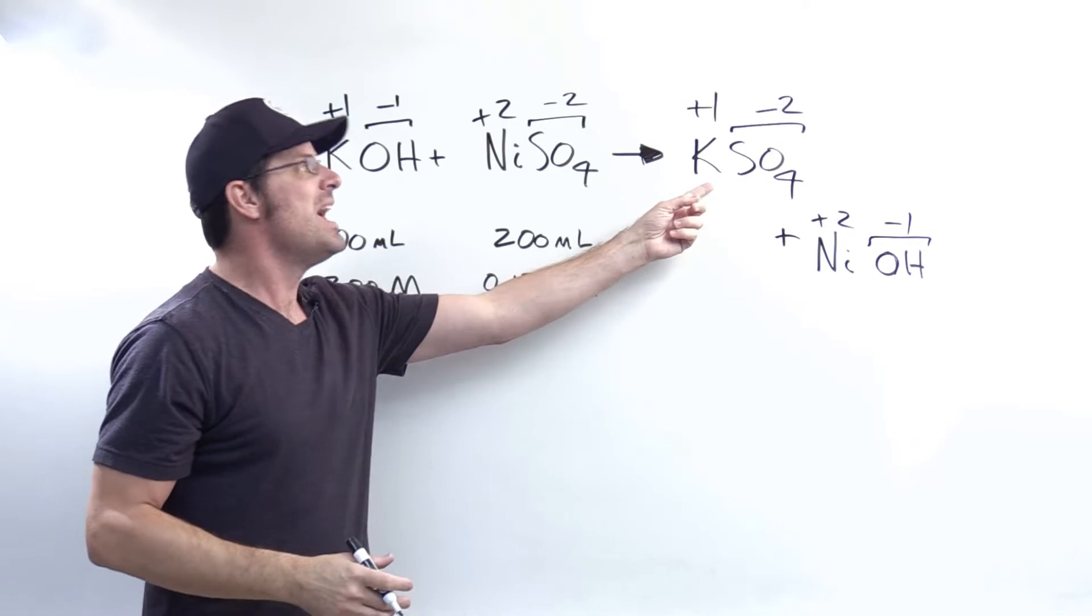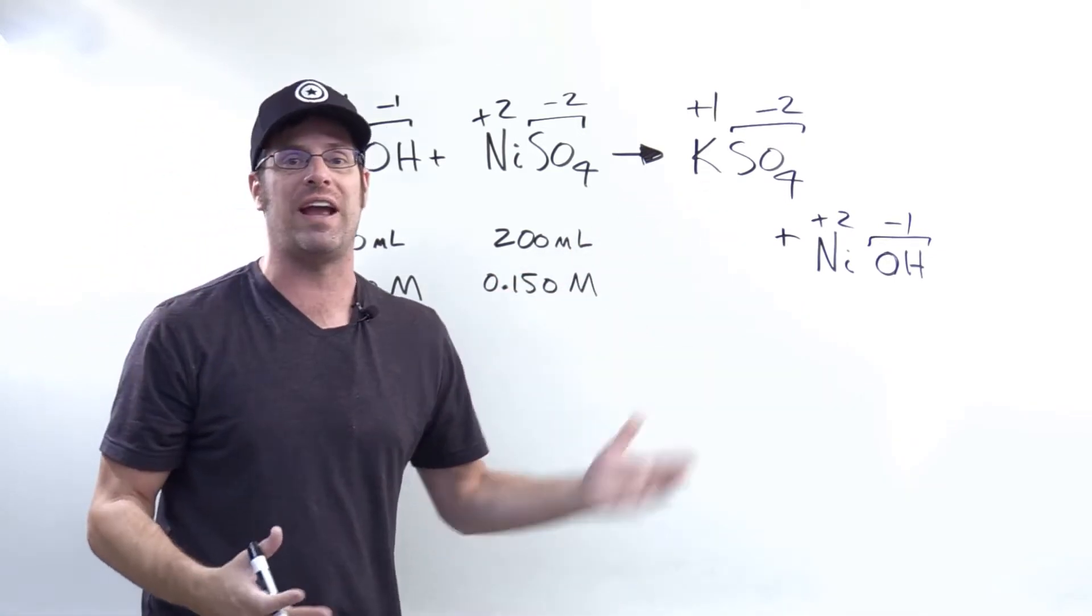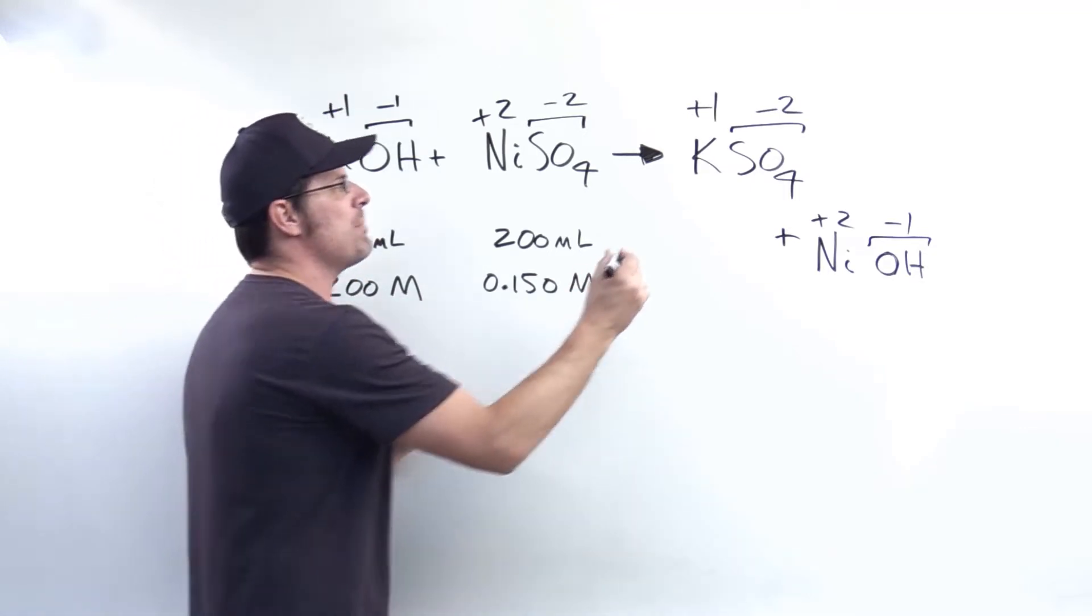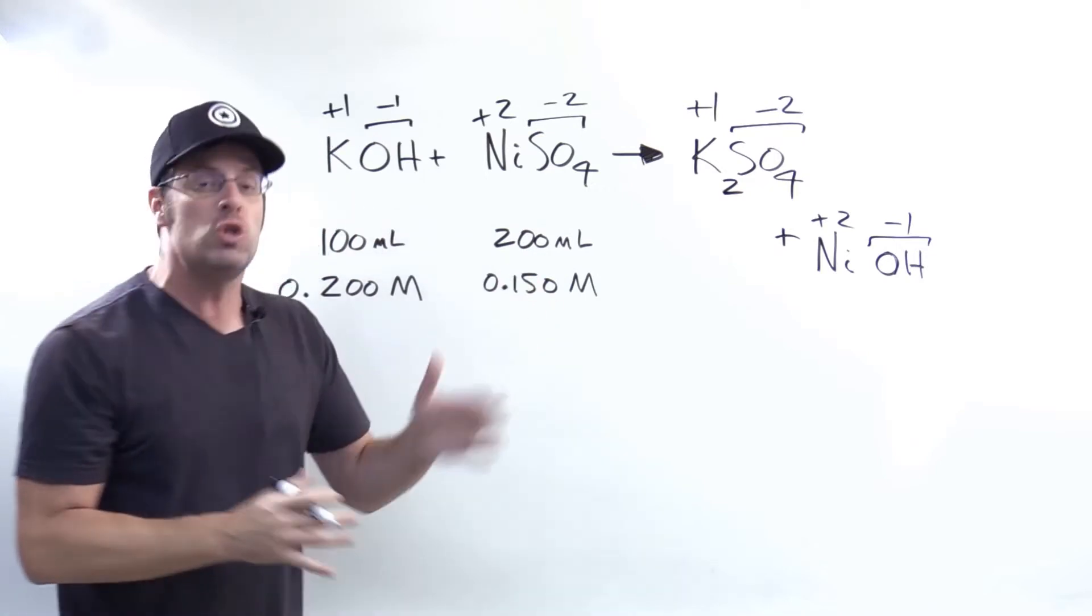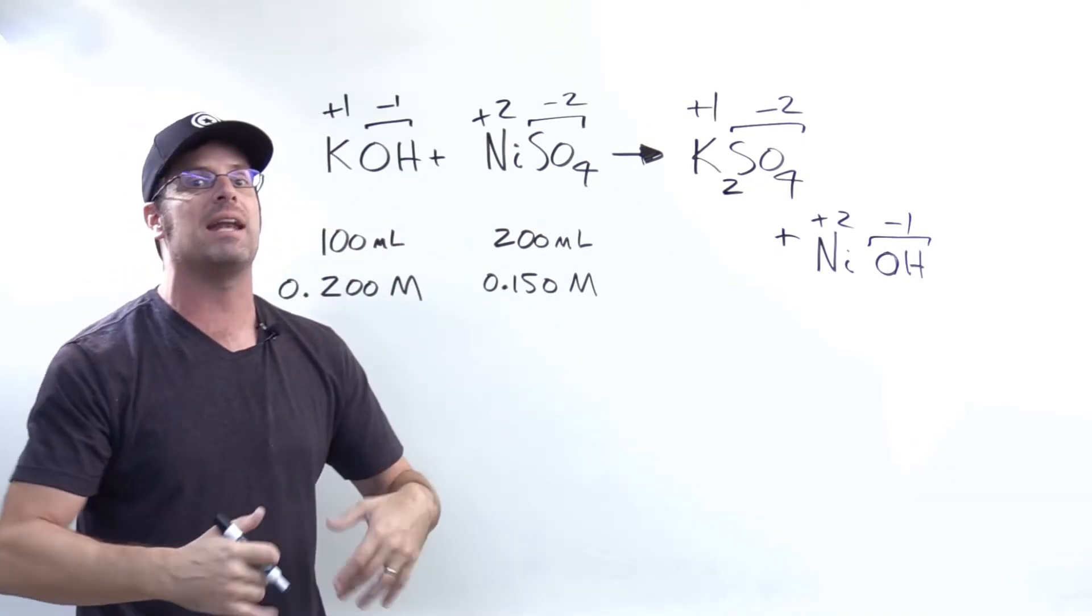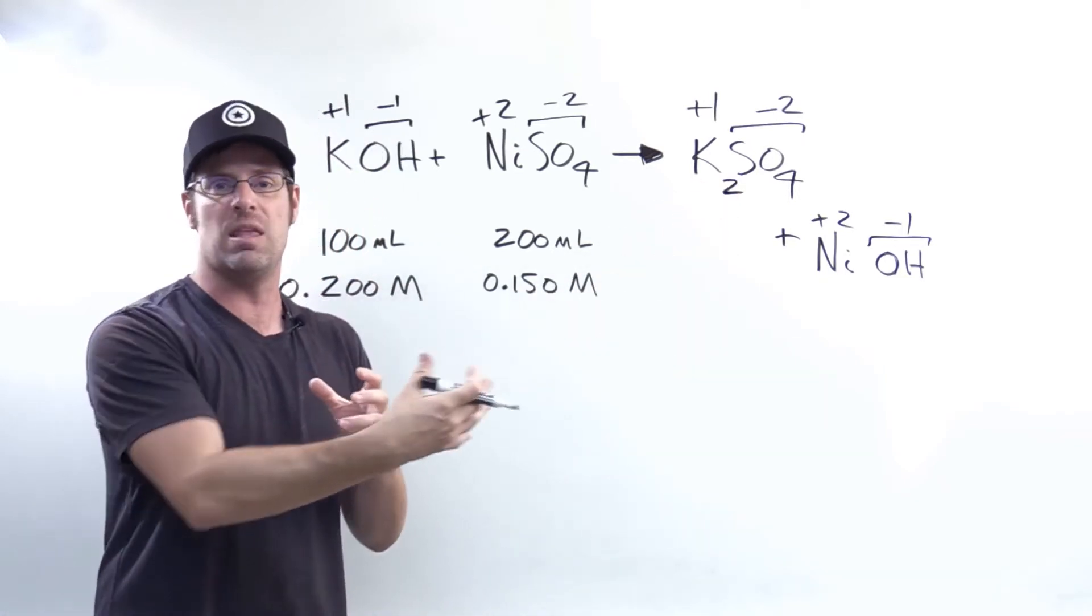I cannot have a plus one potassium cancel out a minus two sulfate written like that. What do I need to do? Yeah, I need to have two potassiums in the formula. And I do that by adding a subscript. So now I have two potassiums, each of which have a plus one charge, together combined, give you in toto a plus two, which will cancel out the minus two in the paired sulfate.